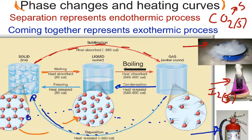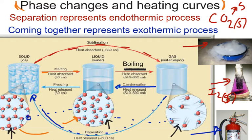Take a look at these pictures here. We notice that solid has a regular geometric structure to it. But as more heat is added and it goes to a liquid, the particles are moving around and getting a bit more random. And as the liquid turns to gas, the gas particles are all over the place, moving in a much more random fashion.